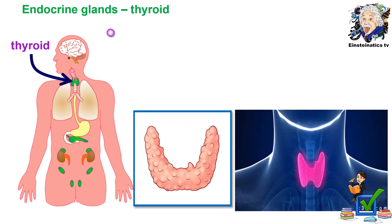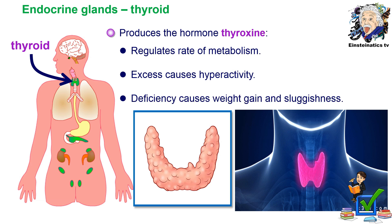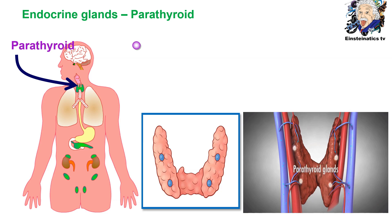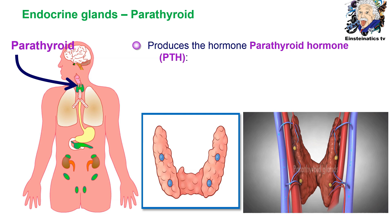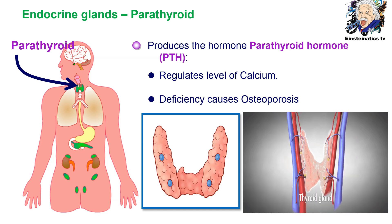Another type of gland is the thyroid gland. This endocrine gland produces the hormone thyroxine, which regulates the rate of metabolism. Excess production of thyroxine causes hyperactivity, while deficiency causes weight gain and sluggishness. Another type of endocrine gland is the parathyroid, which produces the parathyroid hormone used to regulate the level of calcium. Deficiency of this hormone may cause osteoporosis.